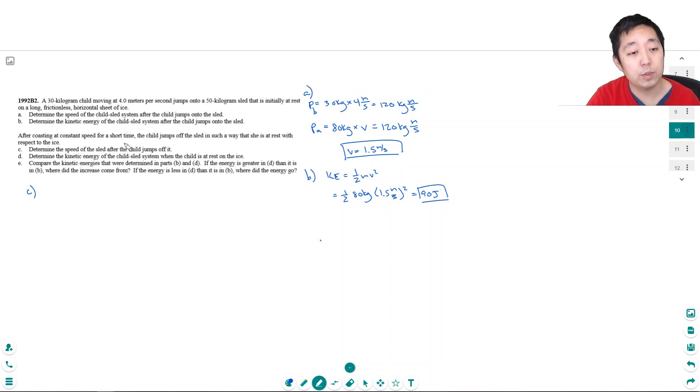C. After coasting at constant speed for a short time, the child jumps off the sled in such a way that she is at rest with respect to the ice. Determine the speed of the sled after the child jumps off of it. Now the momentum's conserved. The momentum's still the same, it's still 120 kilogram meter per second momentum.